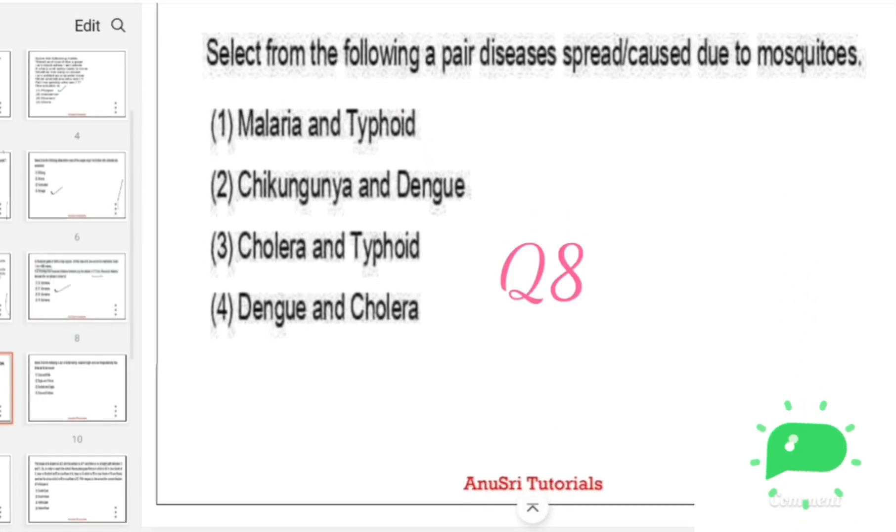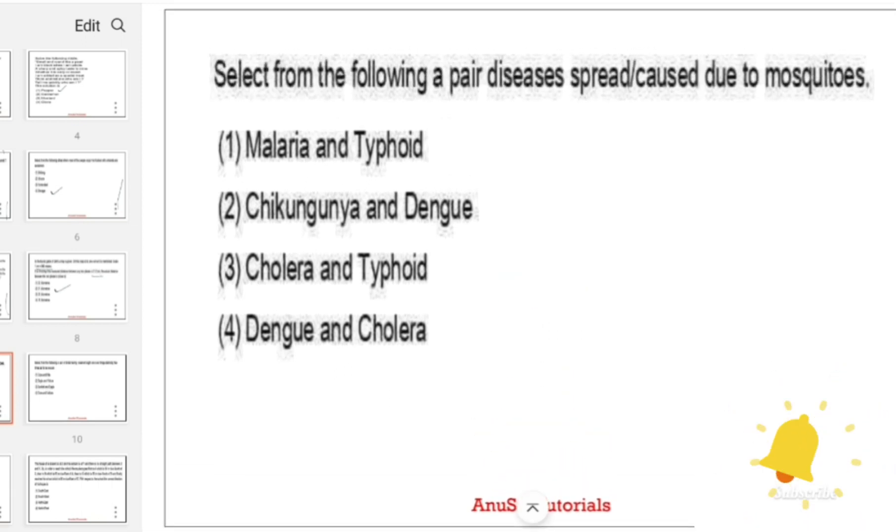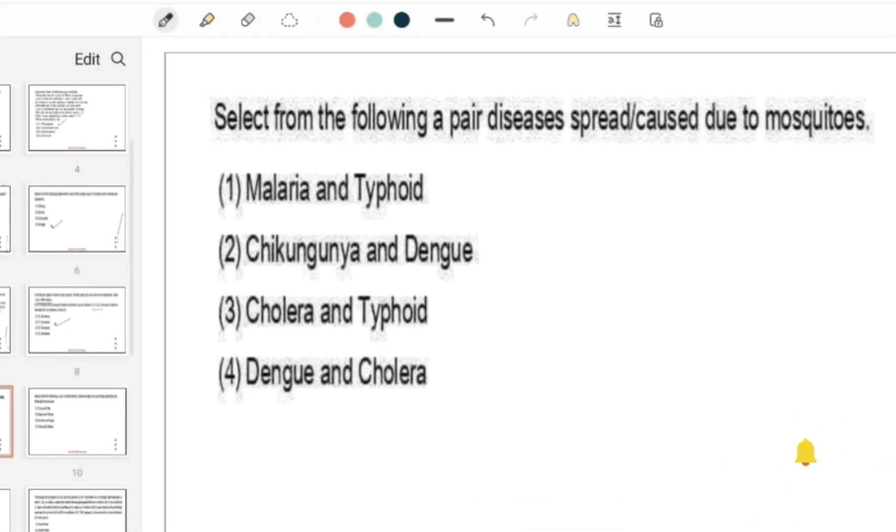Select from the following pair of diseases spread by mosquitoes. Options are: Malaria and typhoid, Chikungunya and dengue, Cholera and typhoid, fourth one is Dengue and cholera. Chikungunya and dengue is the right answer.